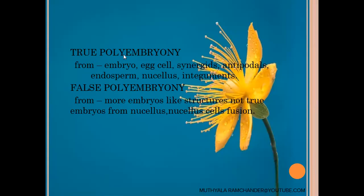True polyembryony means embryos are developed from the embryo itself, from the egg cell, from synergids, from antipodals, from endosperm, or from nucellus and integuments. If these parts produce embryos, it is called true polyembryony.